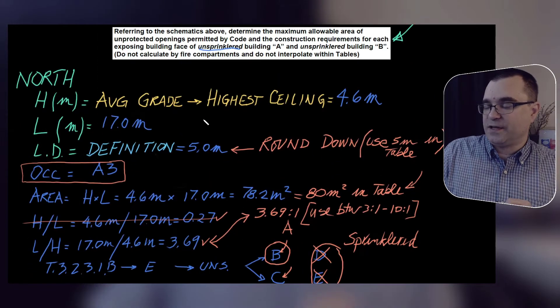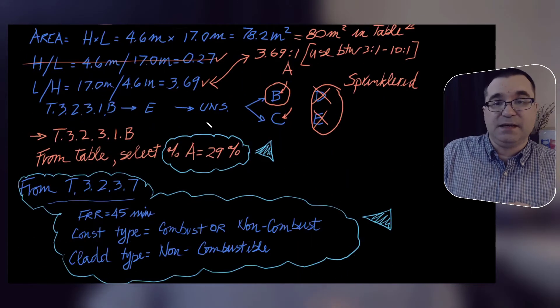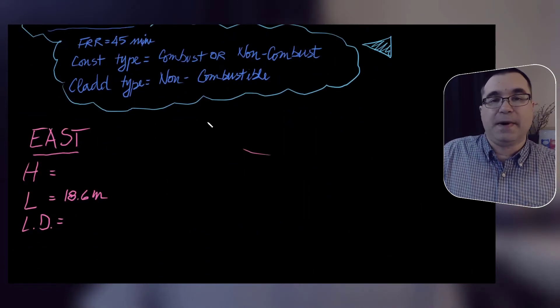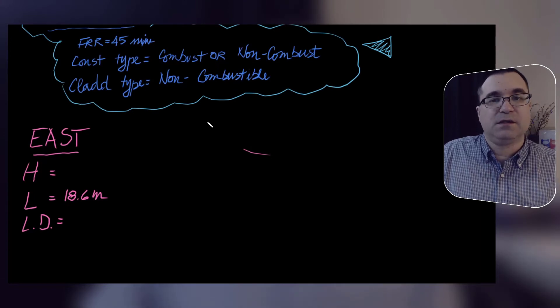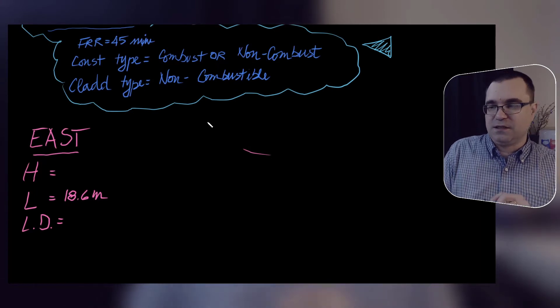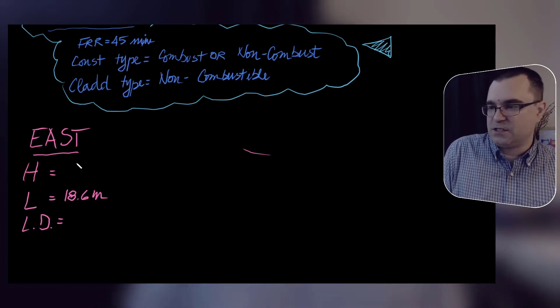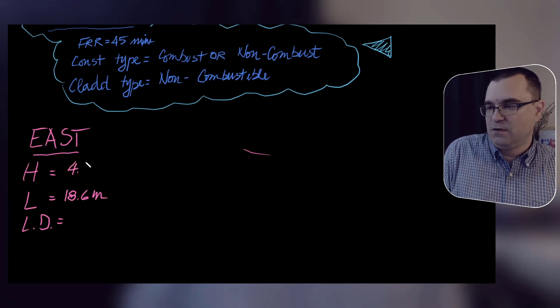Don't forget that the vertical dimension is from average grade to the highest ceiling, which is what's shown in this specific example: 4.6 meters.